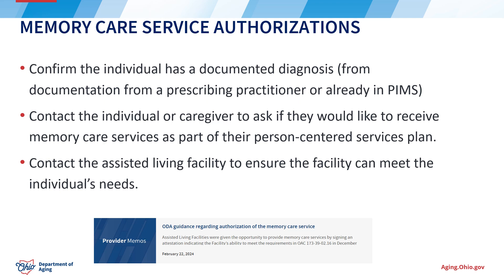For example, some providers are only providing memory care services within secured wings of the setting. Make sure you aren't authorizing the memory care service for an individual if the individual isn't living in the area of the setting where the provider agreed to deliver the service. If the provider is unable to provide memory care services or the individual is not interested, the case manager will then authorize basic assisted living services. If the provider is able to provide memory care and the individual agrees, you will then authorize the memory care service on the person-centered service plan.